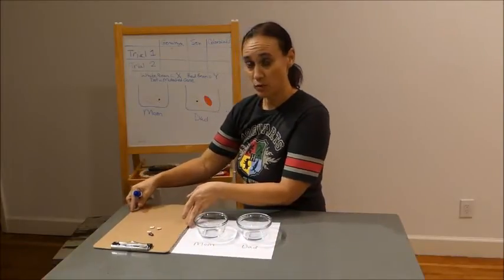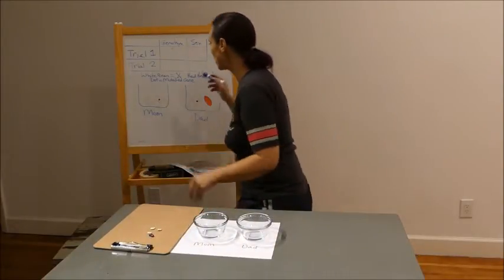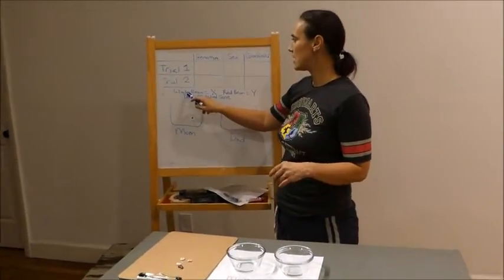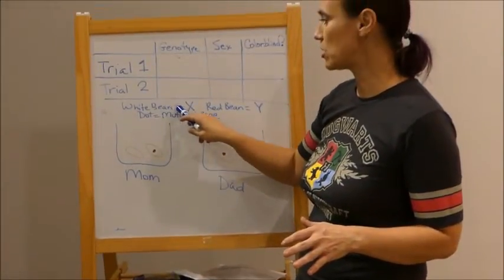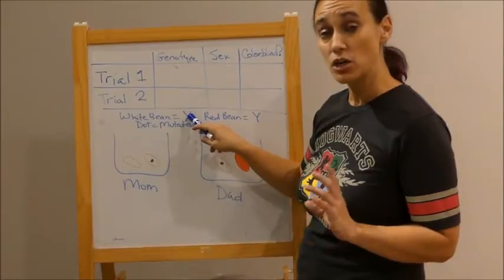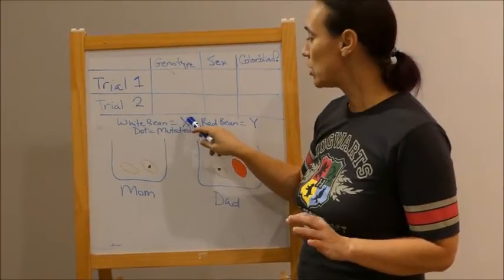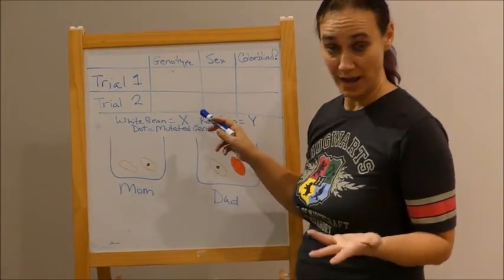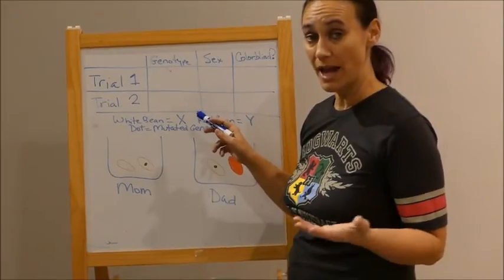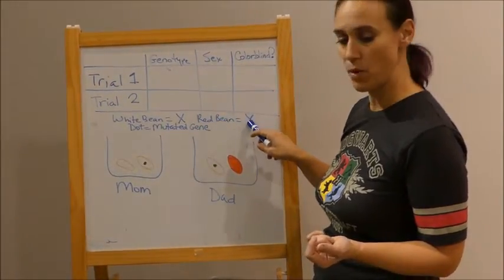Okay, so here's what I'm going to do. Look at my board. I see that on my board white beans are going to be my X chromosome. Okay, so if I'm a female I have to have two X's. If I'm a male I have to have an X and a Y. Well, my red bean is going to be my Y.